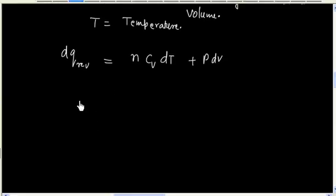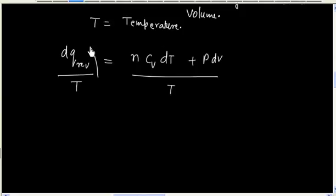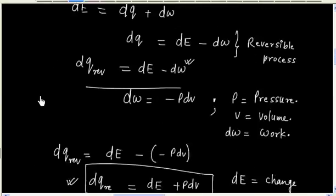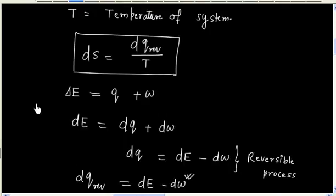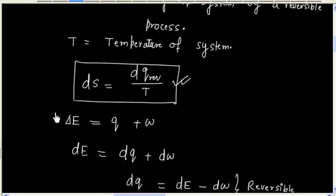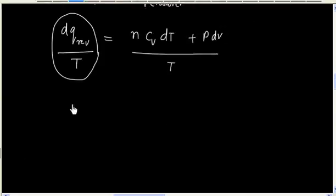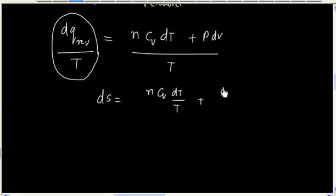Now we can divide both sides by temperature. The expression dQ reversible divided by T is nothing but dS. So we have dS equals nCv dT divided by T plus P dV divided by T.